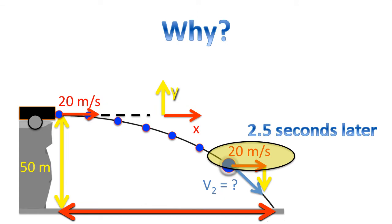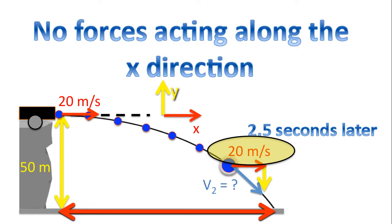Alright, I hope you gave it some thought. But we know the X component. Why is this? Remember, we said that along the X direction there are no forces acting. And if there's no forces acting, that means the velocity in the X direction cannot change.